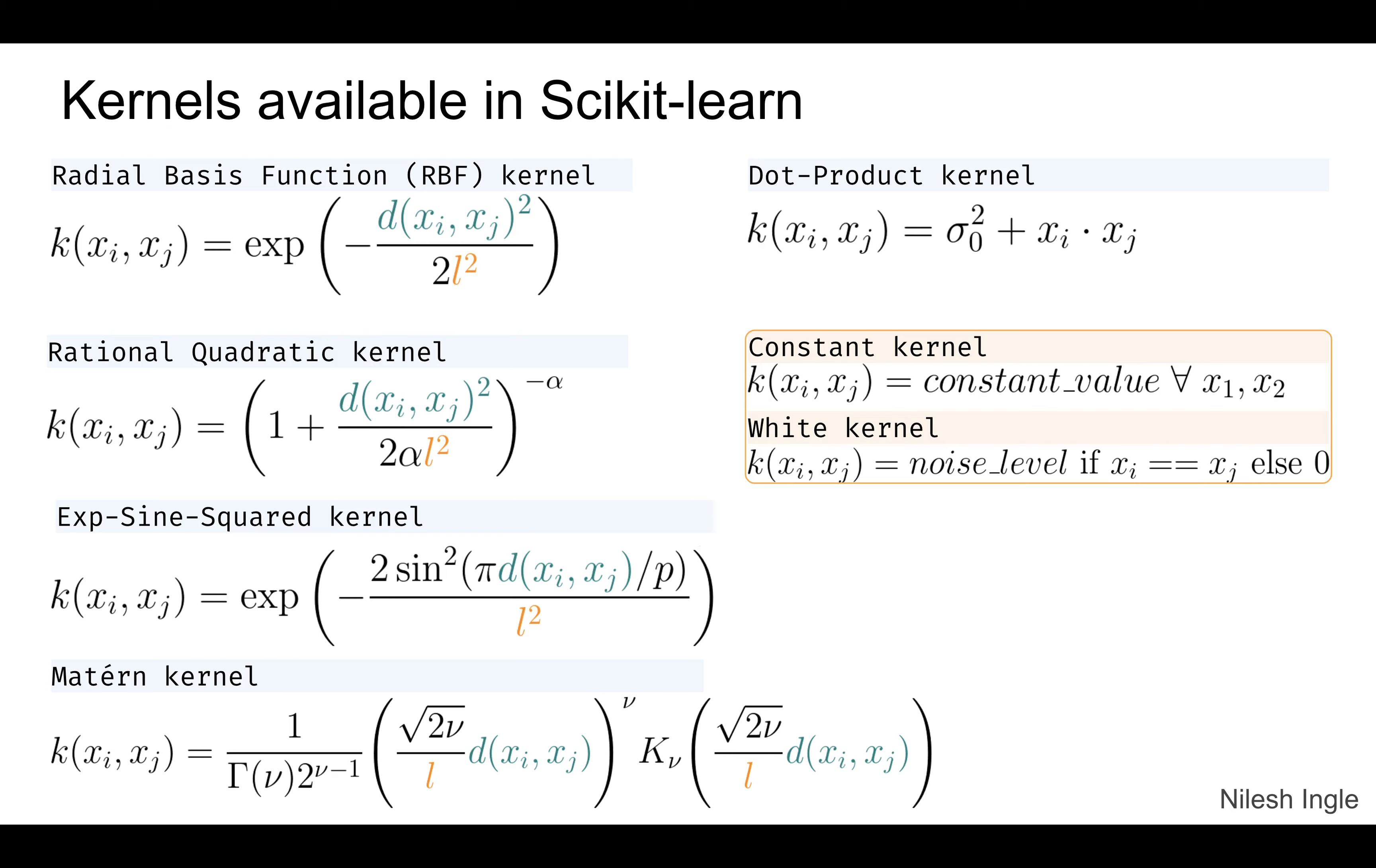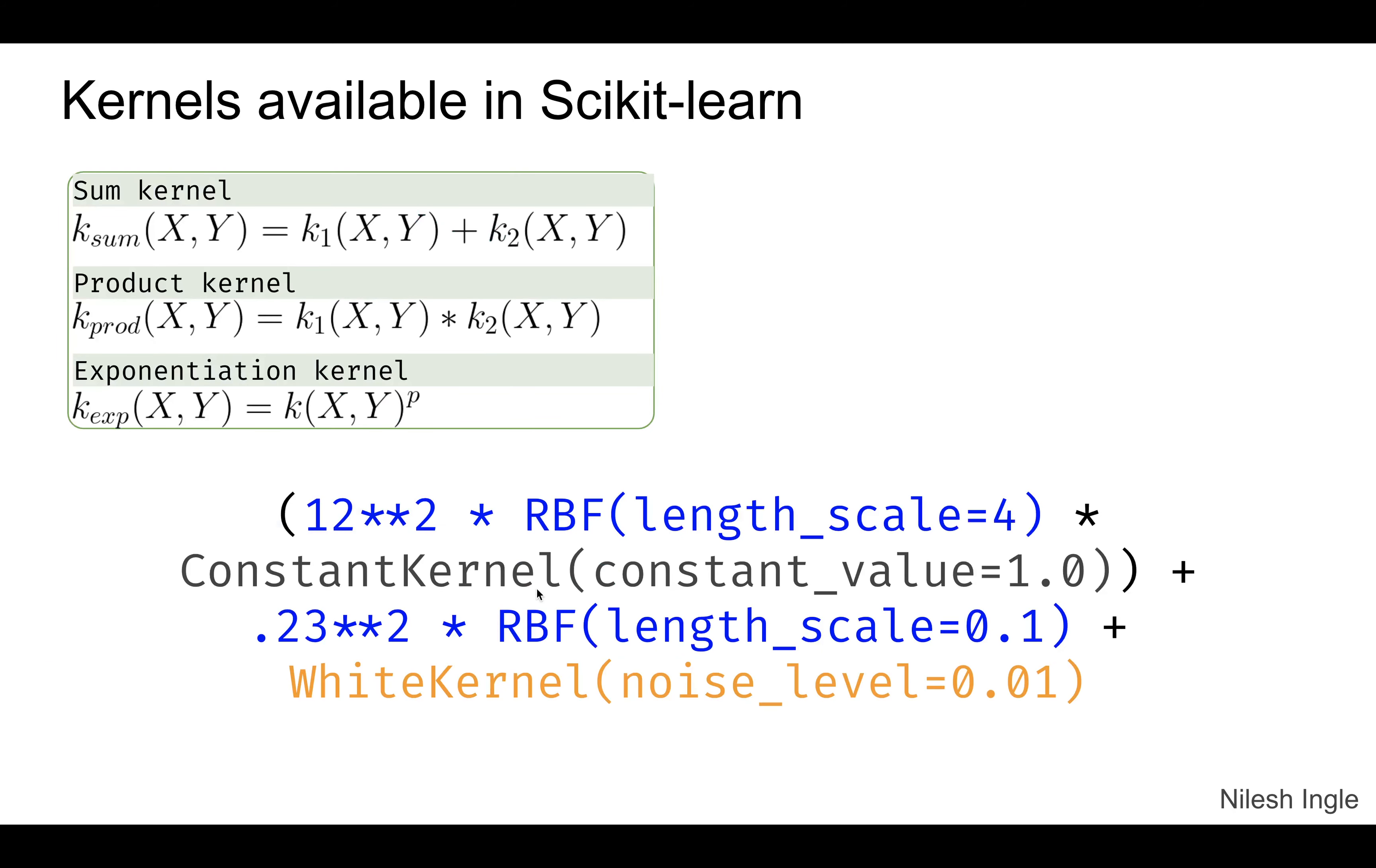If we look in this particular case, there is some kernel product kernel and exponential kernel. We can take, for example, the RBF kernel and multiply it to the constant kernel using the product, or we can add all of that to another RBF kernel using the sum. There are various combinations of these that we can use to create the final kernel that goes into the model.